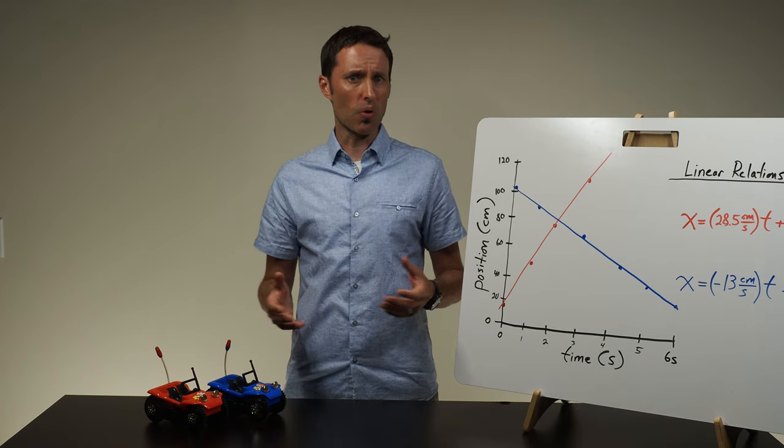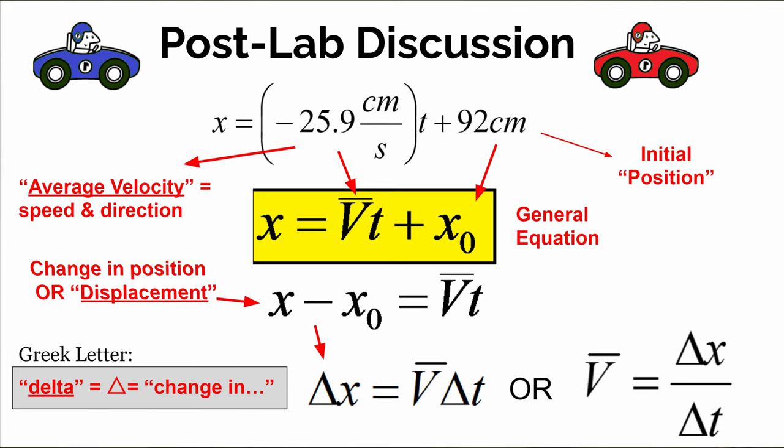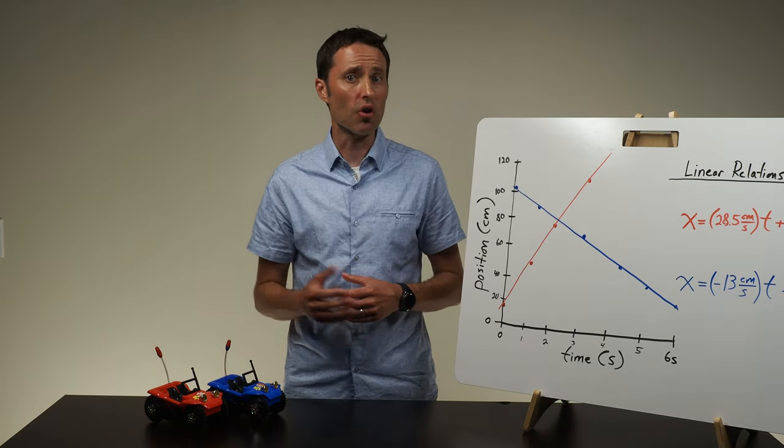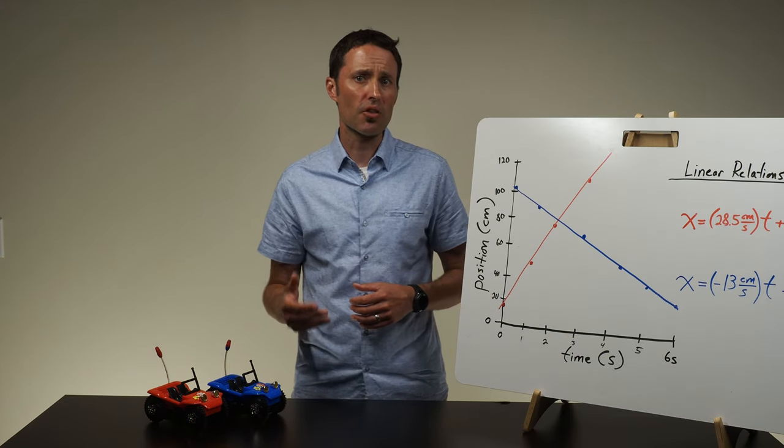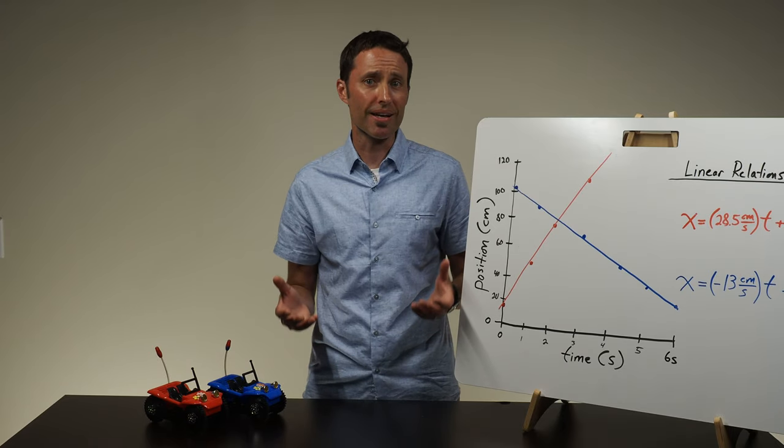Each group's graph and equation only describes how the position of their car is related to time. Now with a consensus about the meaning of the slope and y-intercept, you can define velocity and show students how to write the general equation for all the cars. Simply replace the numbers of the slope and the y-intercept with symbols which represent the meaning of each. This general equation not only describes how position and time are related for all of the cars used in the experiment, it is also used to make predictions about the motion of these cars or any other object which moves in a straight line at a constant speed.